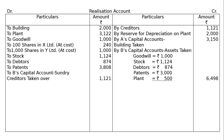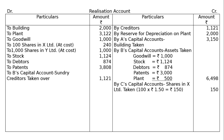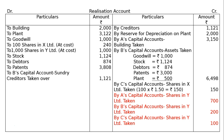Next, by C's Capital Account — Assets Taken Over. It is written that C is to take over the shares in X Limited at Rs. 150 each. By C's Capital Account, 100 shares in X Limited at Rs. 150 each, that is Rs. 150. Then by A's Capital Account — Shares in Y Limited taken. The shares in Y Limited are to be divided in the profit sharing ratio of 7:2:1, by A's Capital Account, by B's Capital Account, by C's Capital Account — Shares in Y Limited taken.